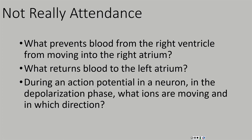What returns blood to the left atrium? Blood is coming into the left atrium from the lungs. So we have left and right pulmonary veins returning blood to the left atrium. There are two left pulmonary veins and three right pulmonary veins, but we can just collectively call them the left and right pulmonary veins.